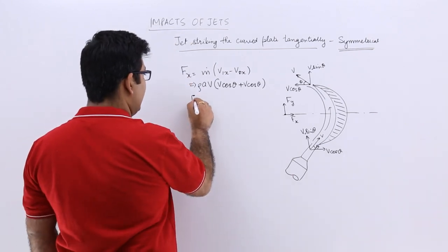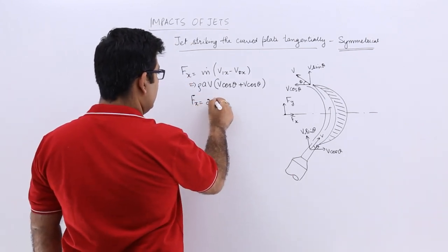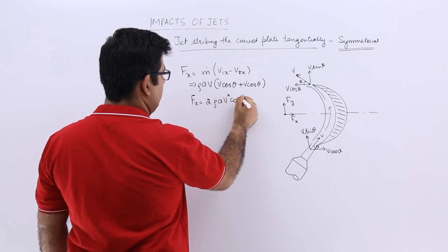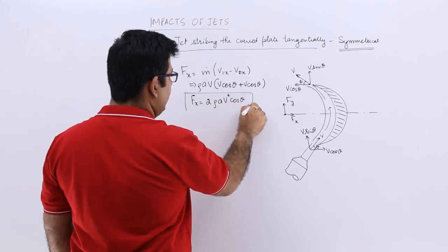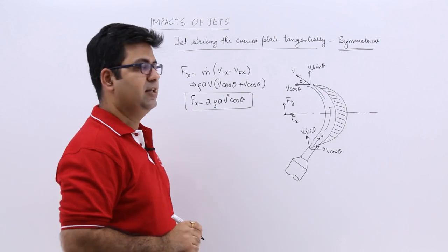So you will have Fx as 2 rho a v square cos theta. So this is the expression to calculate the Fx.